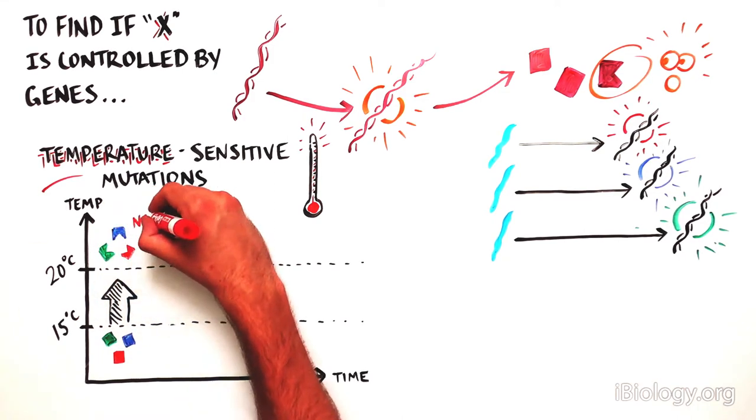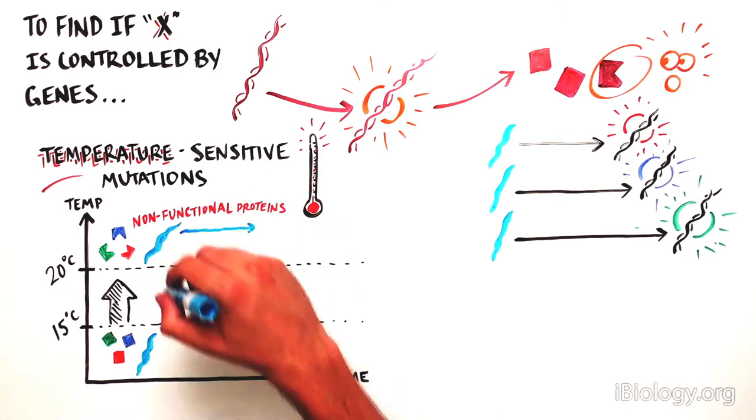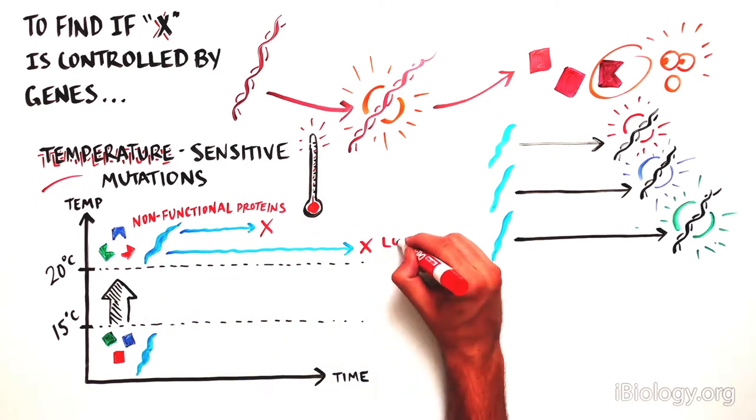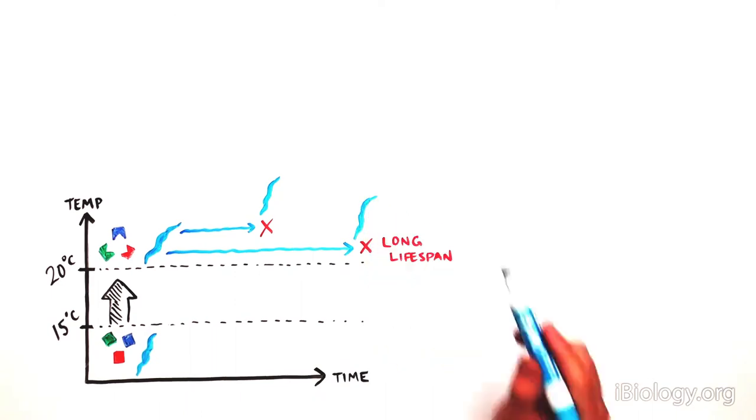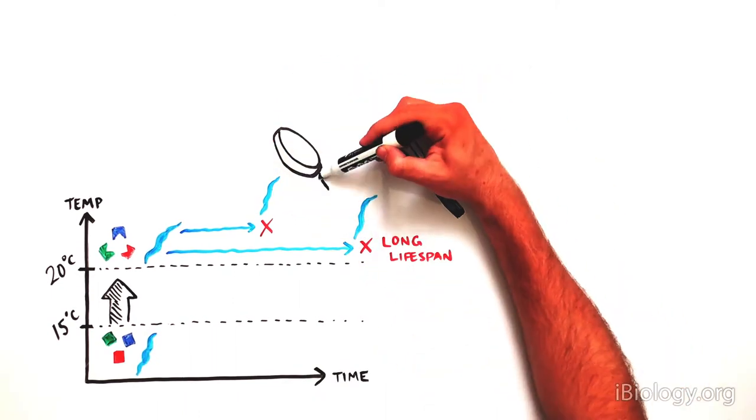At this higher temperature, the mutations took effect. They then tracked the lifespan of these worms and found that at the higher temperature, some worms lived twice as long as others.